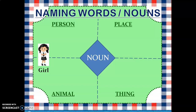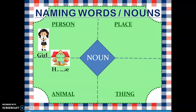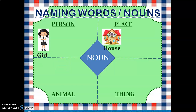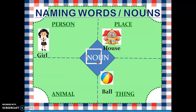So the first one — that's a girl and this goes to column person. Second one — that's a house and it will go to place. Third one — that's a ball, it will go to column thing. The fourth one — that's a bird, it will go to column animal.